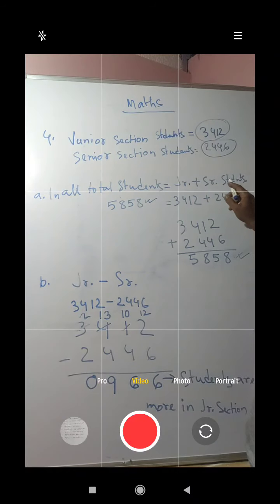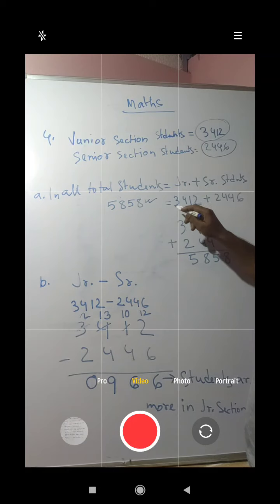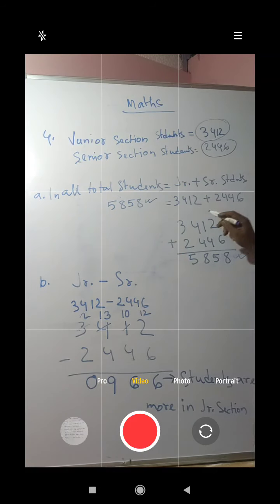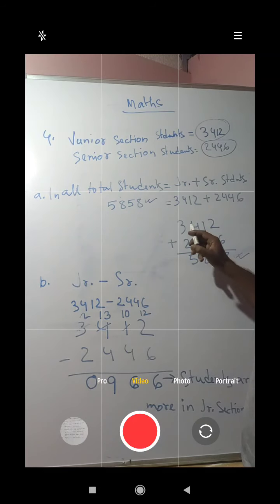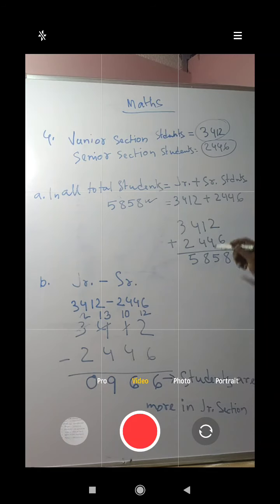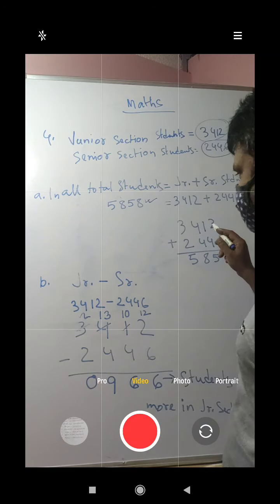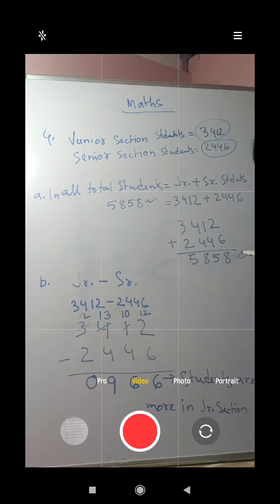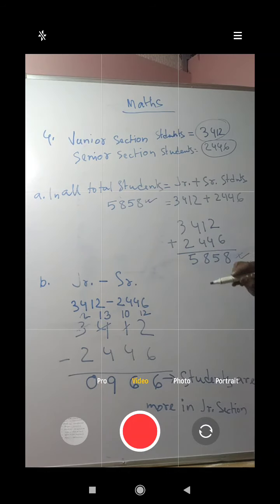To find the total students, we write junior plus senior students. For our ease of doing addition, we write 3412 plus 2446. Adding: 6 plus 2 is 8, 4 plus 1 is 5, 4 plus 4 is 8, 3 plus 2 is 5. So the total is 5858 students in the school.